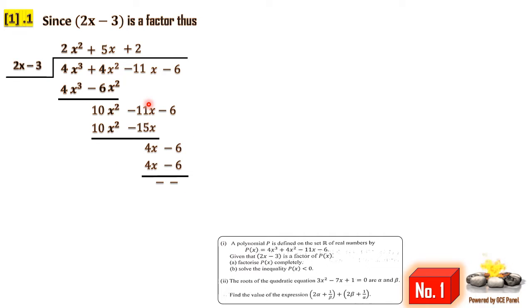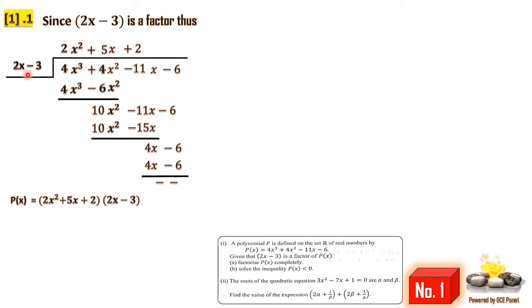Of course we already knew the remainder was going to be 0 because we were told 2x minus 3 was a factor. Therefore p(x) can now be written as the product of the quotient and the divisor — that is (2x squared plus 5x plus 2) times (2x minus 3). But we cannot end here because they said to factorize completely.